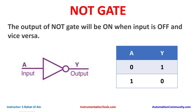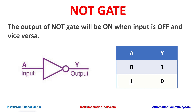The output of NOT gate will be ON when input is OFF, and the output of NOT gate will be OFF when input is ON. You can see in the table: when input is false, the output is true, and when input is true, the output is false. It inverts the input — or we can say it negates the output. Hence, due to this inversion of output, it is also called inverter.